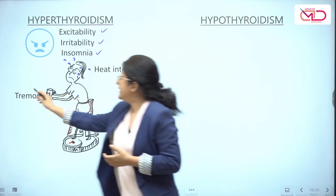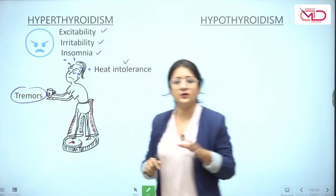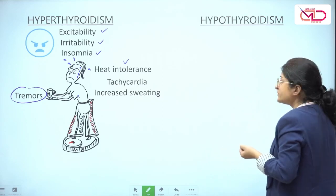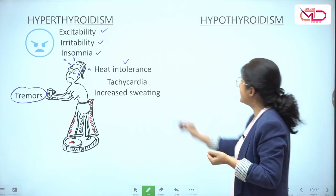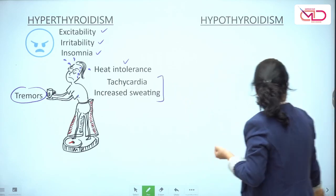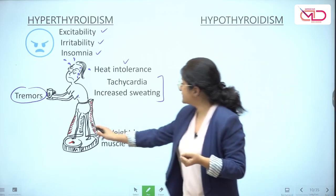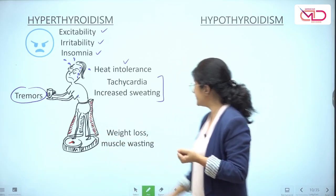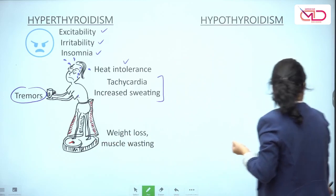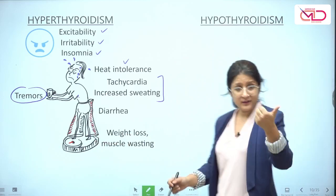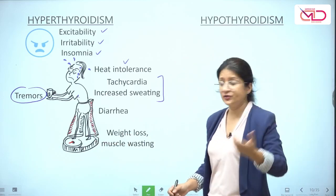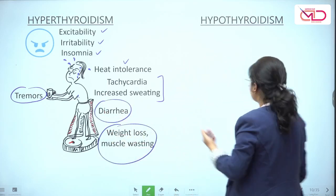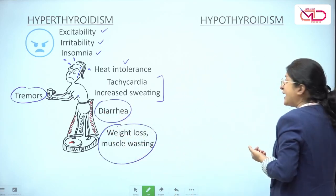There are fine tremors — not like the tremors of Parkinsonism, but fine tremors. Tachycardia and increased sweating are present. Weight loss and muscle wasting are evident — look at the thin legs and loosened trousers. Diarrhea is also a symptom because thyroid hormone increases GI motility. These are the symptoms of hyperthyroidism.